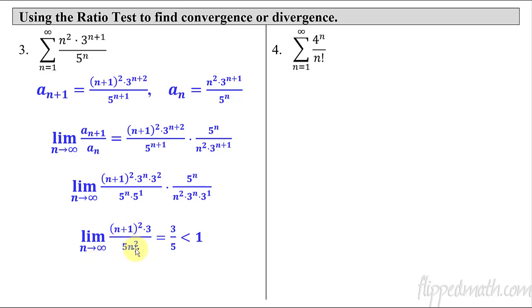So since I'm doing a limit as n approaches infinity, I'm just looking, I've got an n squared, an n squared. So I'm just doing leading coefficients. And that is 3/5. And since 3/5 is less than 1, that tells us that this series converges.